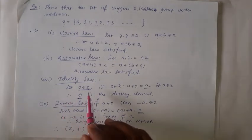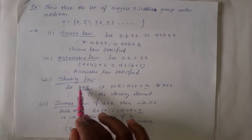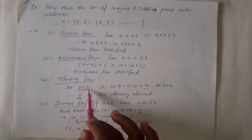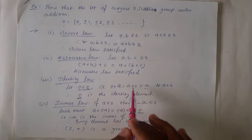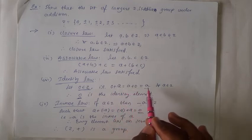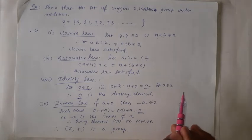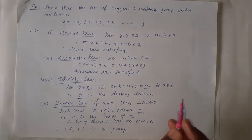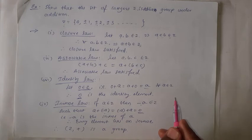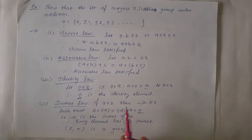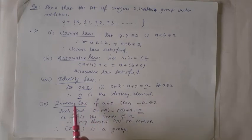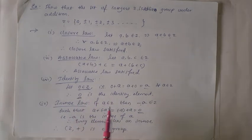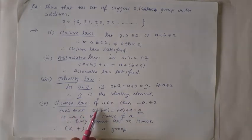Then the third one is the Identity law. Let 0 belong to Z, because we know that 0 is also an integer. So 0 + a is equal to a + 0 is equal to a for all a belonging to Z. Because if you add 0 to any number, the number will not change. Therefore, 0 is the identity element of Z.